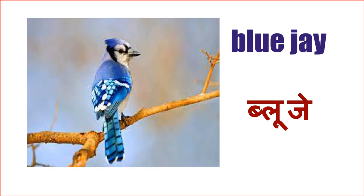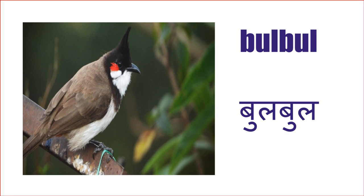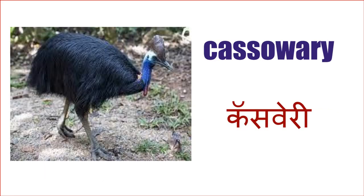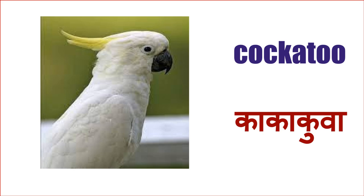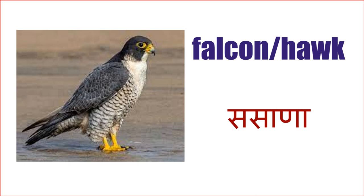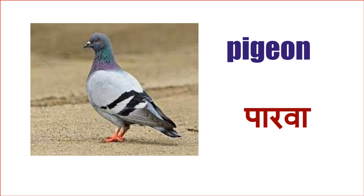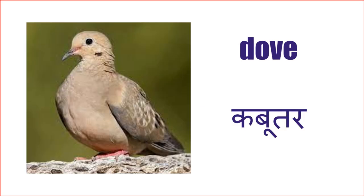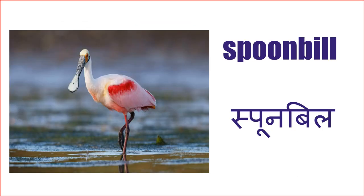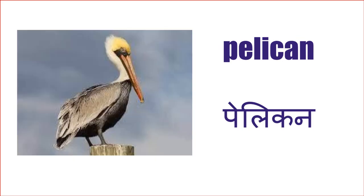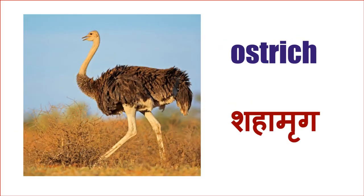Blue Jay. Bulbul. Cassowary. Cockatoo - Kukatu kima Kakatu. Falcon kima Hawk - Sasana. Pigeon - Parwa. Dove - Kabutar. Spoonbill - yaa chii choj chamcha sarki azthe, mnunu niya la Spoonbill mhantat. Penguin. Pelican. Ostrich - Shahamruk.